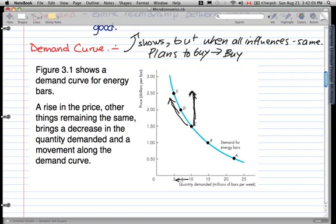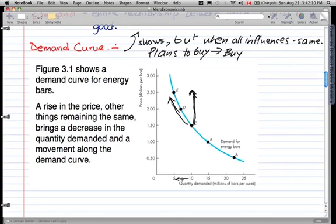The quantity demanded of a good will increase or decrease. If the price rises, the quantity would decrease. If the price gets lowered, then the quantity would increase.